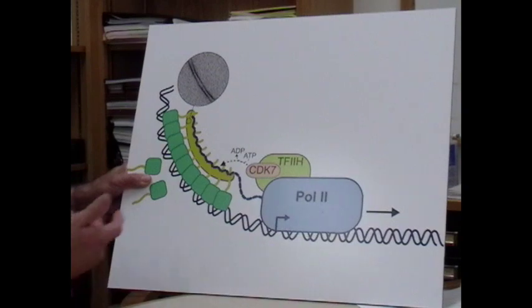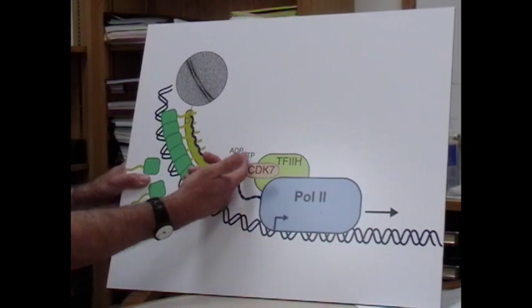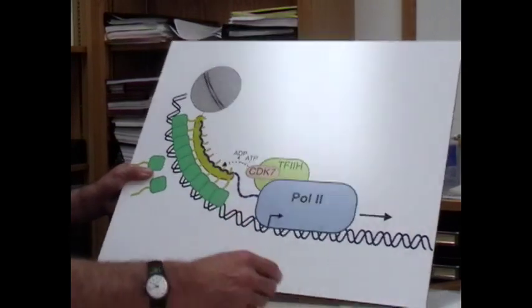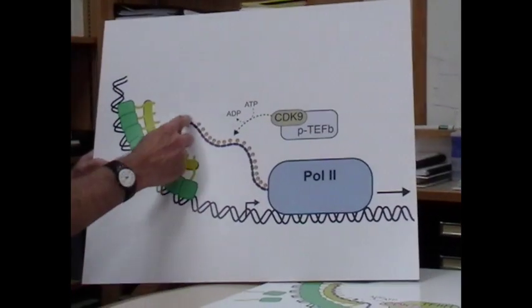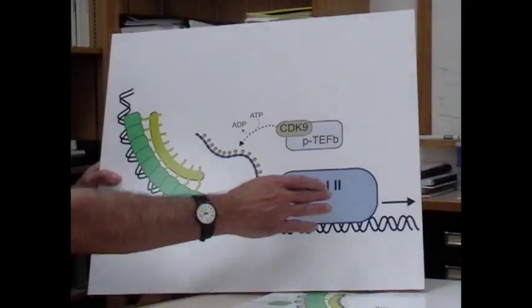As a function of the action of the CDK enzymes, the cyclin-dependent kinase enzymes in ATP, the CTD is phosphorylated. That phosphorylation allows the CTD to be released from the polymeric fiber for transcriptional elongation.